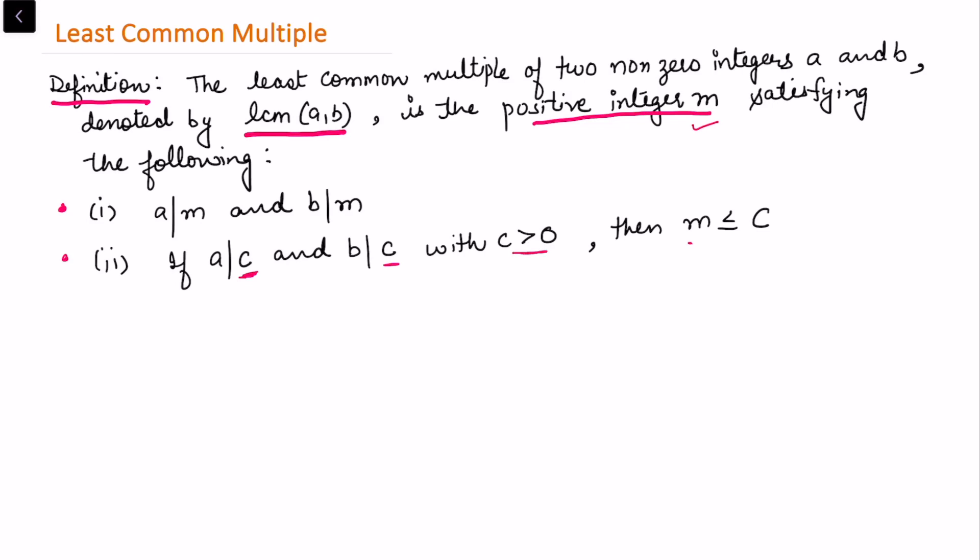We note that zero is a common multiple of a and b. So what we are usually trying to search in least common multiple, we try to search a non-trivial common multiple of a and b which is least. And as we can see that these two integers are non-zero,